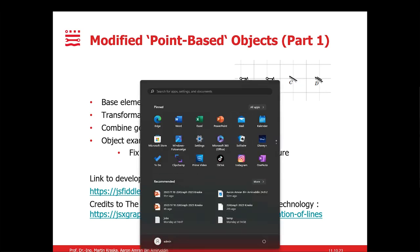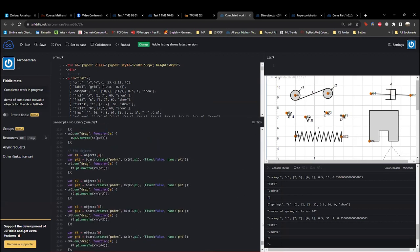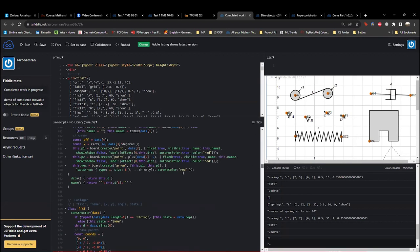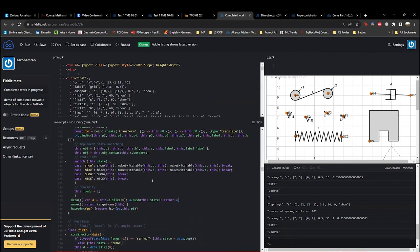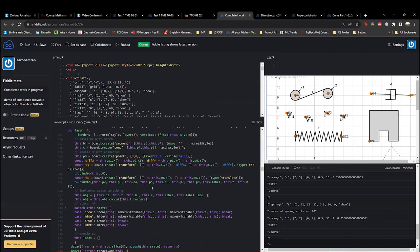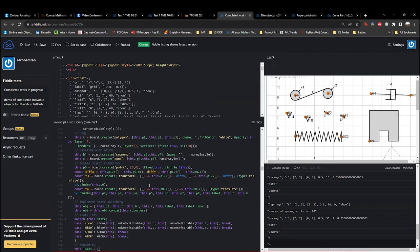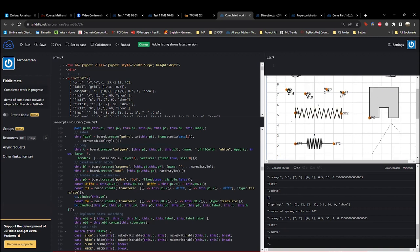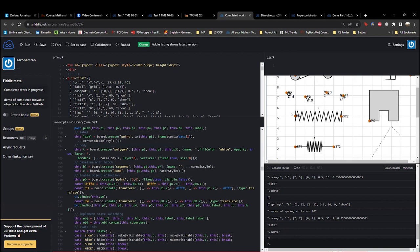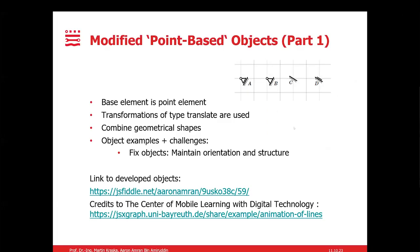Okay. So basically what I did for the fixed object was, I got the idea from one of the example websites from JSXGraph. The idea basically is to calculate the difference between a reference point, and we apply that difference as a transformation of type translate to the rest of the points. What this will cause, it will cause the entire shape of the object to remain constant.